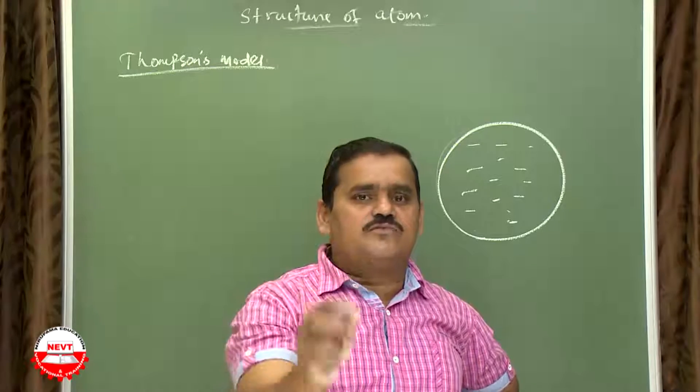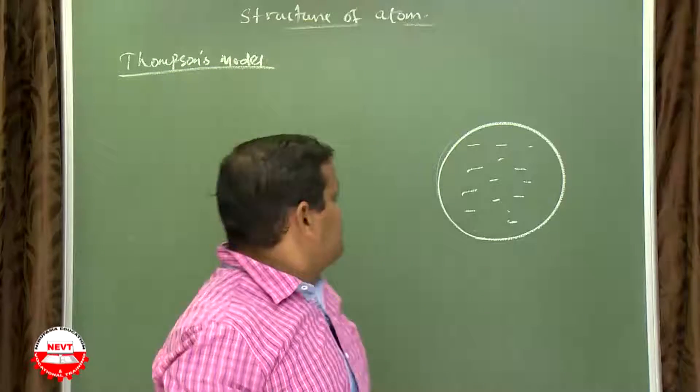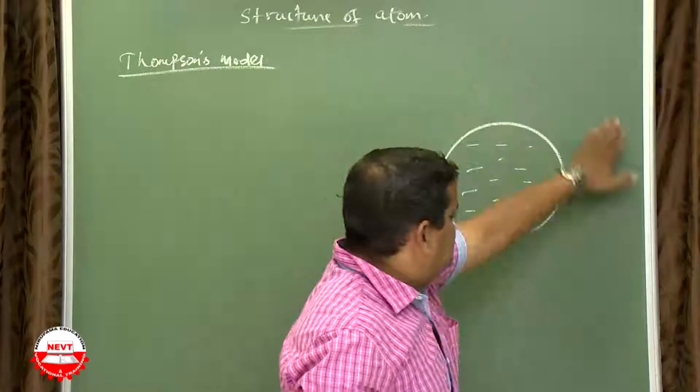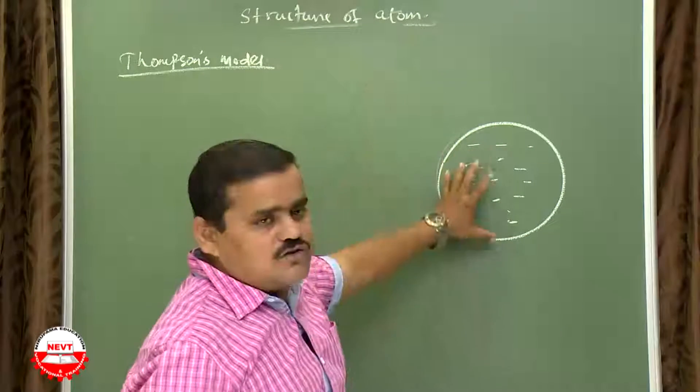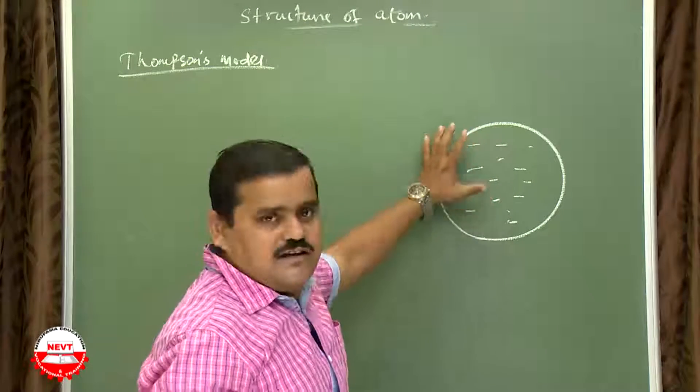Means the electrons are distributed inside it like seeds in watermelon or dry fruits in cake, Christmas cake. You have noticed that the dry fruits are spread over it. So Thomson said that atom is considered positively charged sphere in which electrons are embedded in it.